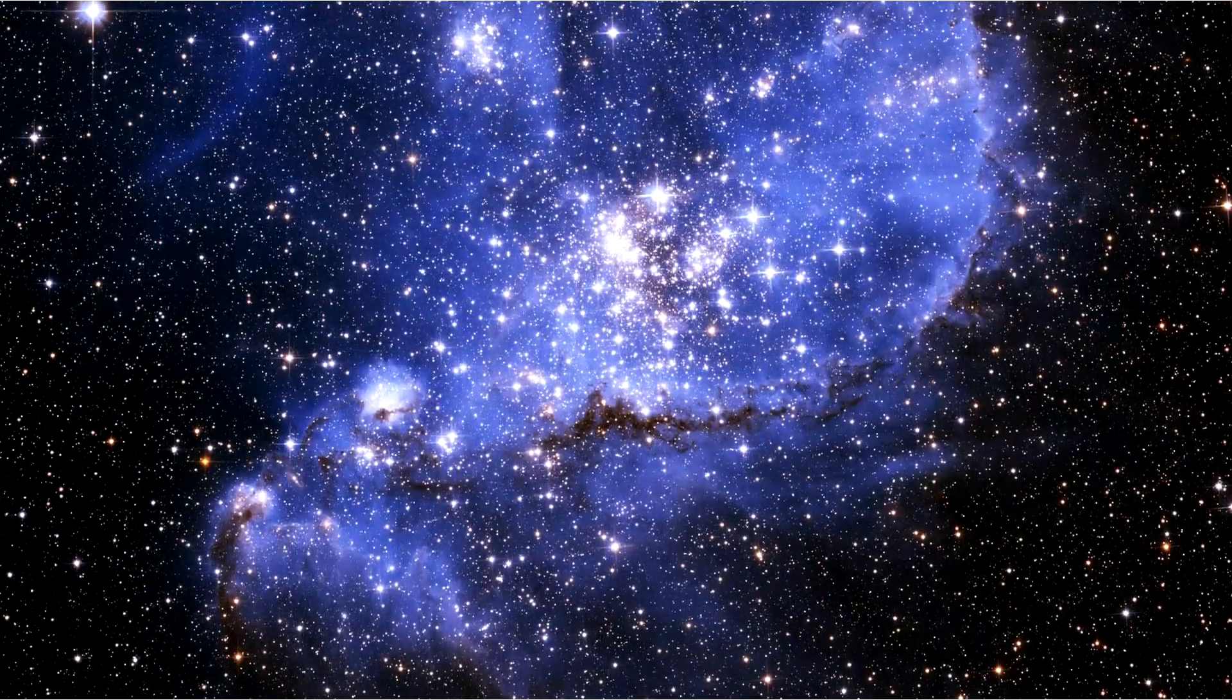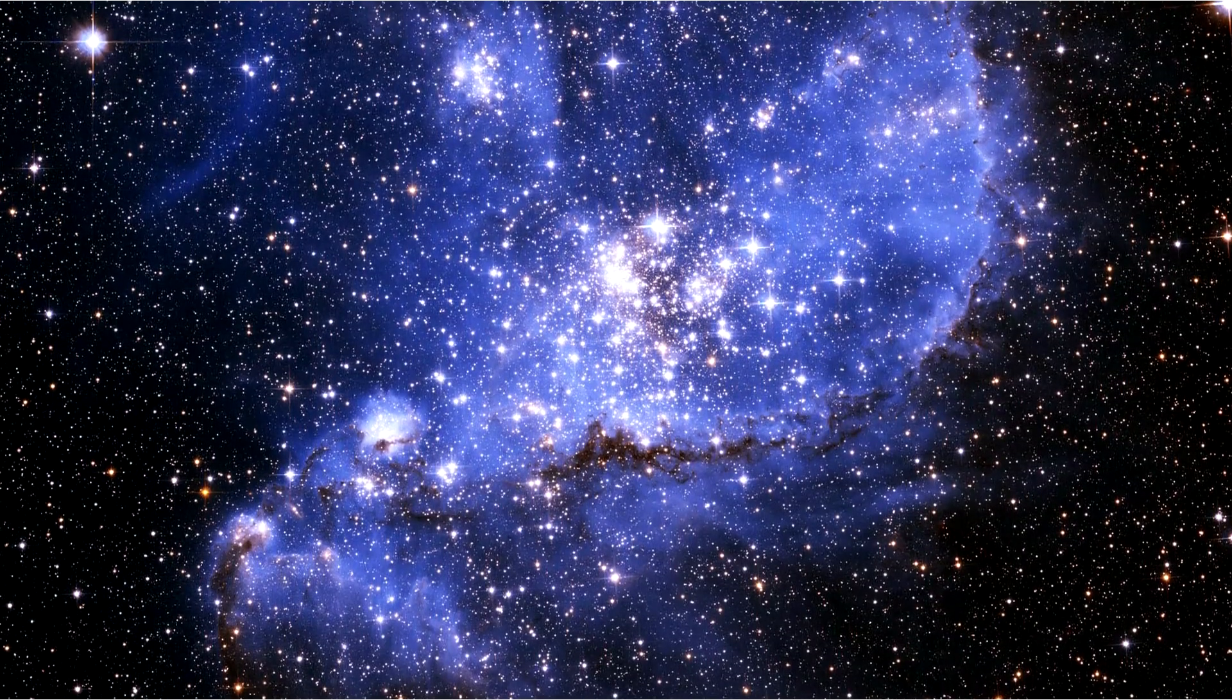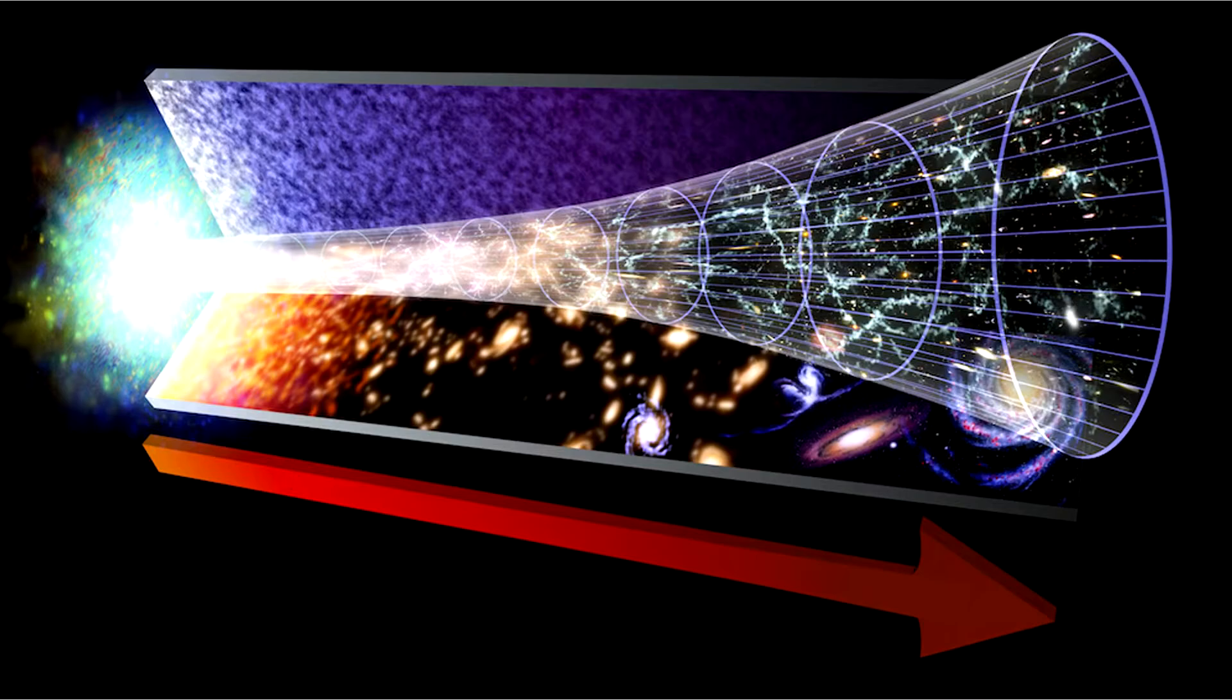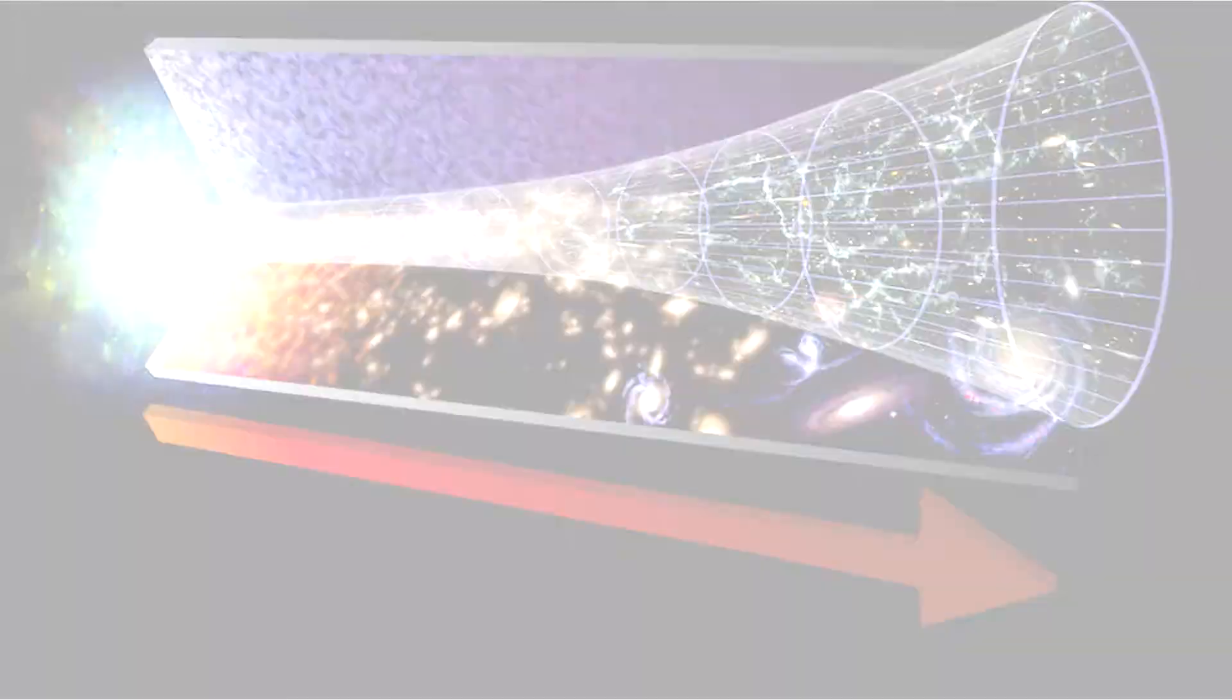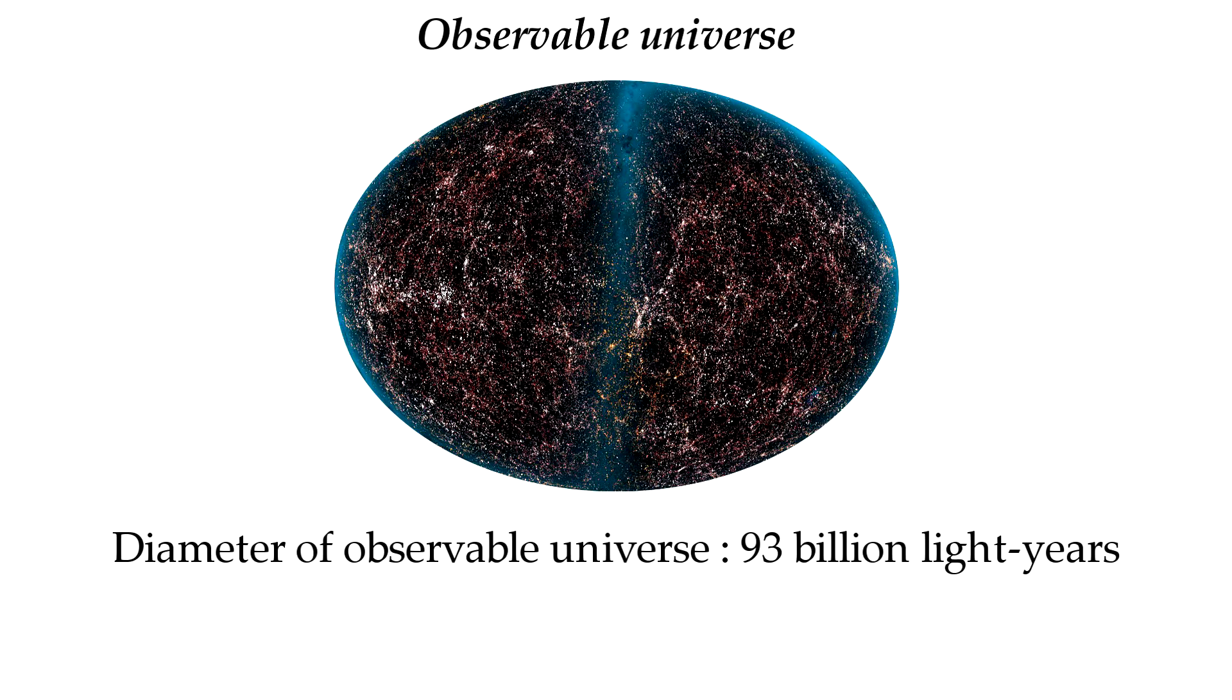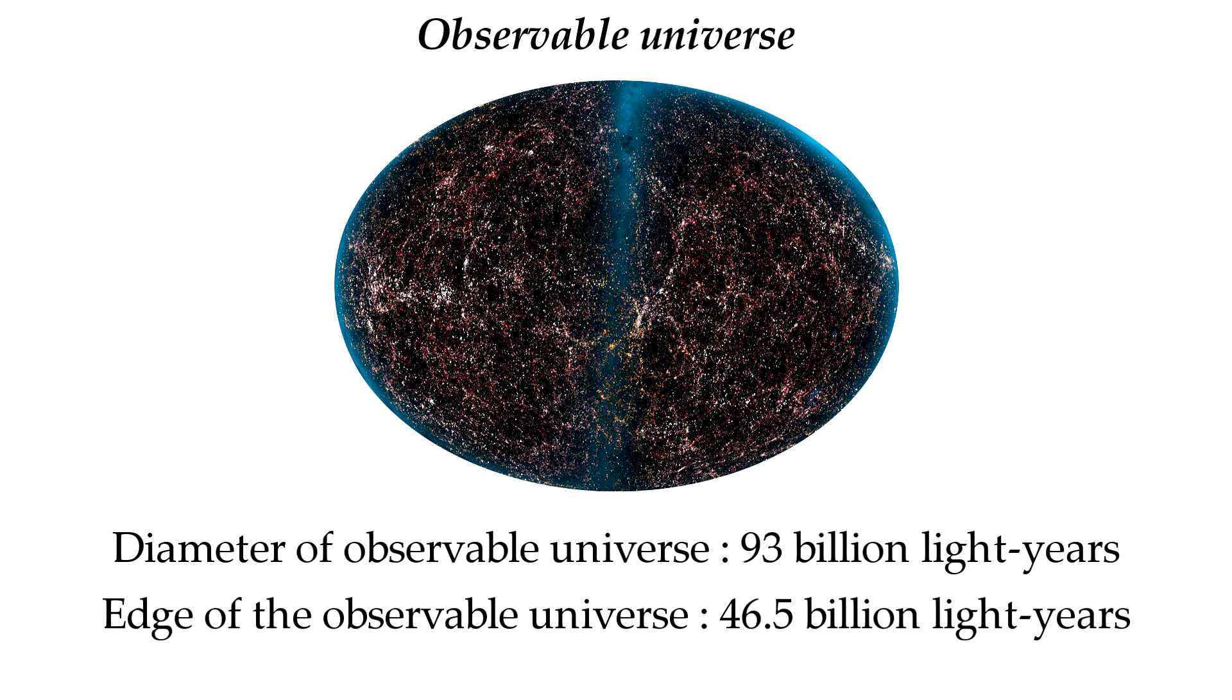It is also important to note that the creationist is not the only one with the distant starlight problem. The naturalists following the Big Bang theory have the same problem with distant starlight. It is estimated that the diameter of the observable universe is 98 billion light years, with the edge of the observable universe at about 46.5 billion light years away. But the seculars believe the universe is 13.8 billion years old. So how are we seeing light 46.5 billion light years away? They have the exact same problem.